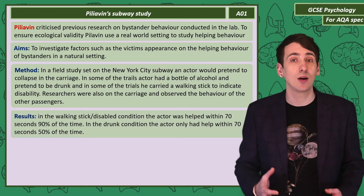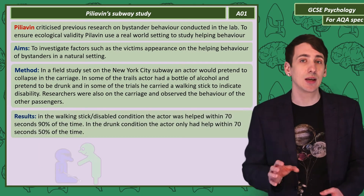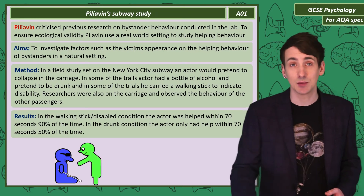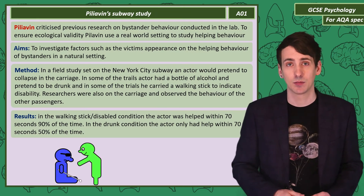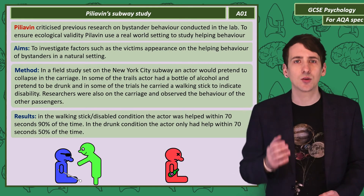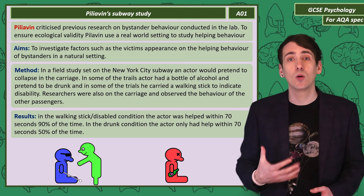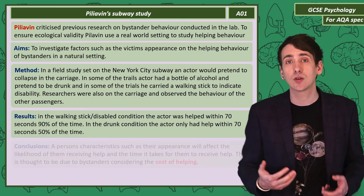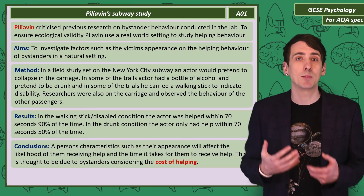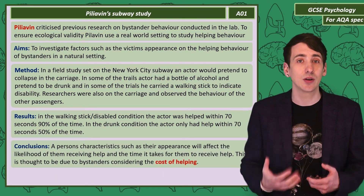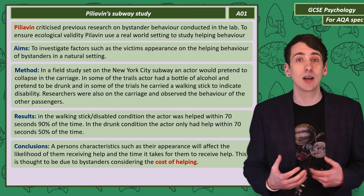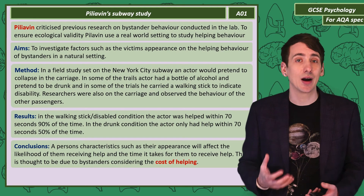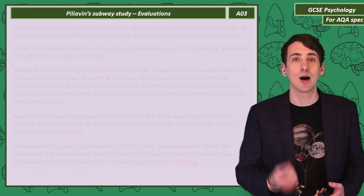What the researchers found was that when the actor appeared disabled, they were helped within 70 seconds about 95% of the time, compared to far lower rates for the drunk condition. The researchers concluded that a person's characteristics, such as appearance, will influence the likelihood of them being helped. This is seen as evidence of bystanders considering the cost of helping.